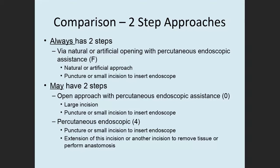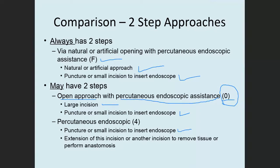Let's look at the two-step approaches. Some always include two steps, some only sometimes. Value F always includes a natural or artificial opening plus a small puncture or incision for the endoscope. An open approach may use percutaneous endoscopic assistance and is still reported as open. Percutaneous endoscopic is sometimes two steps — if an incision is extended or another small incision is made to remove tissue or perform an anastomosis, it's still reported as percutaneous endoscopic.